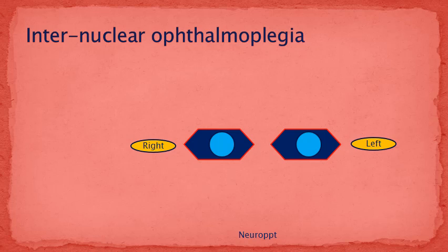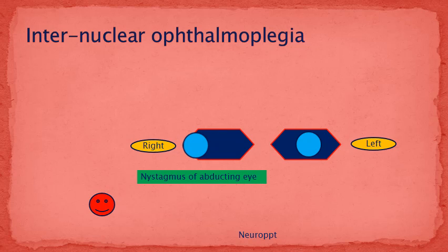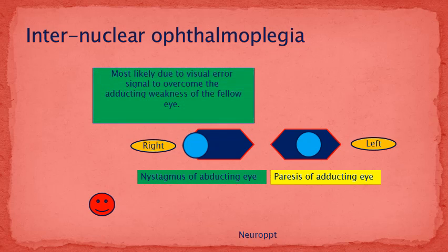Consider this example. Suppose the patient is having a lesion in the left medial longitudinal fasciculus and he tries to look on the right side. There will be nystagmus on the right side — that is, nystagmus of the abducting eye — and there will be paresis of the adducting eye, that is, the left eye. The mechanism for nystagmus of the abducting eye is unclear, but it is most likely due to a visual error signal to overcome the adducting weakness of the fellow eye.